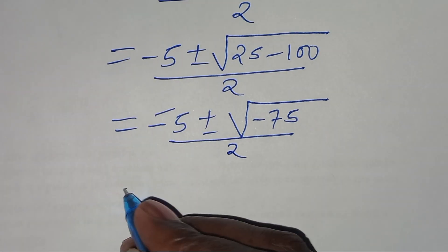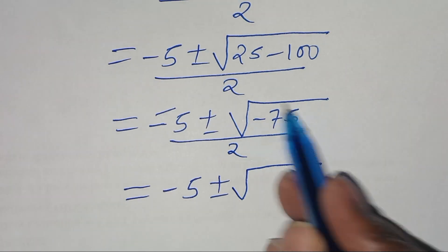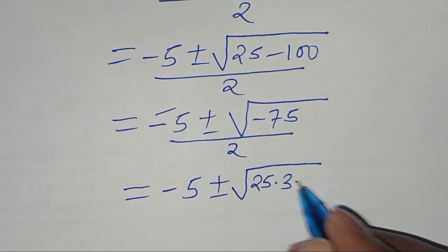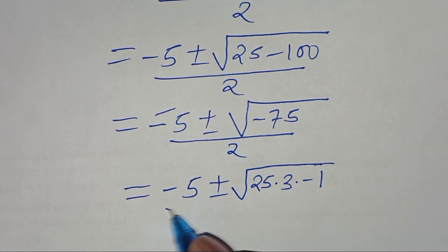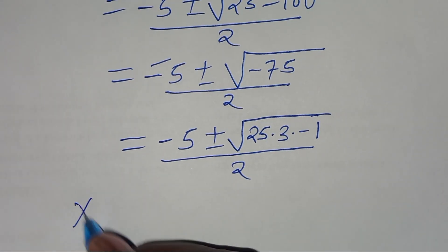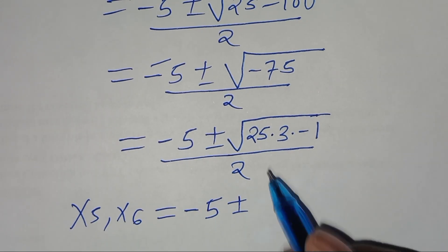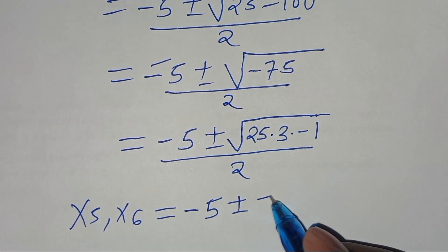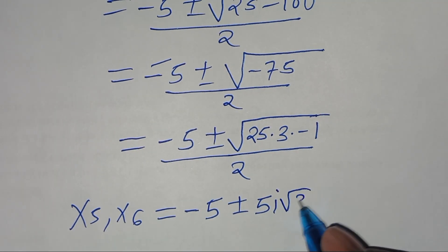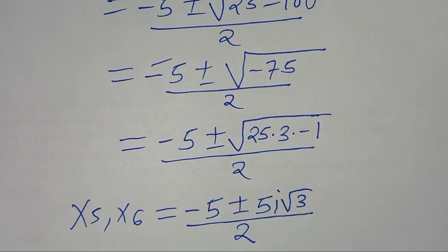So, minus 75 is the same thing as 25 times 3 times negative 1, divided by 2. This implies that x5 and x6 are equal to minus 5, plus or minus the square root of 25 which is 5, times the square root of minus 1 which is i, times square root of 3, divided by 2.